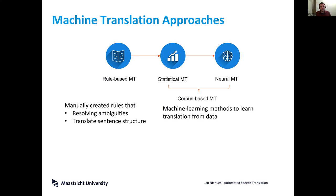In contrast, people are using two different corpus-based approaches: statistical machine translation, which was used earlier, and nowadays neural machine translation. In all these approaches the idea is that we use machine learning to learn how to translate from data — no longer telling the computer directly how to translate.